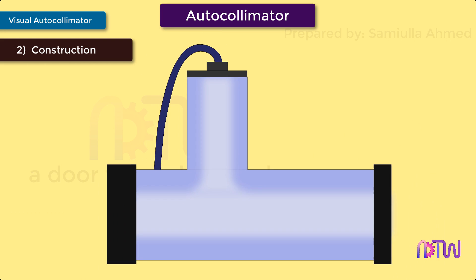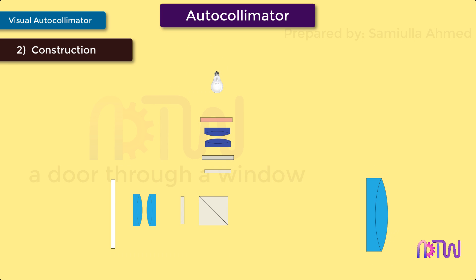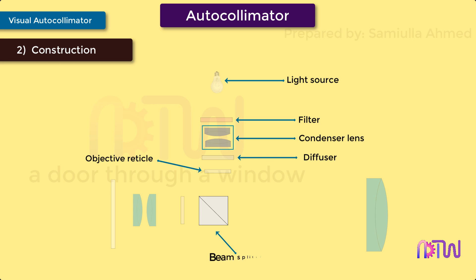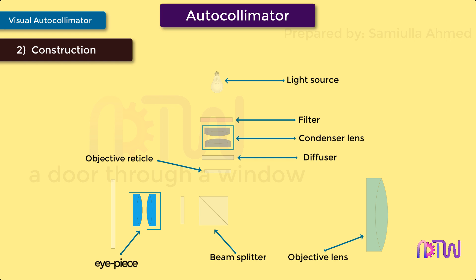The autocollimator consists of the following parts: light source, filter, condenser lens, diffuser, objective reticle, beam splitter, objective lens, and eyepiece.